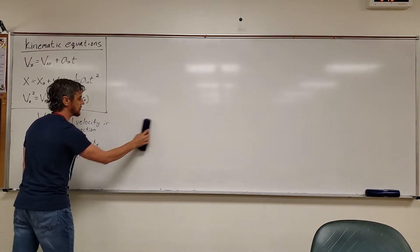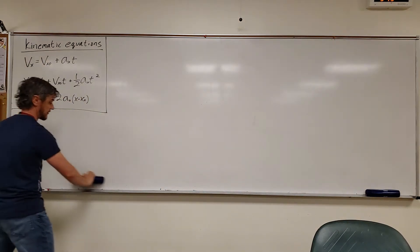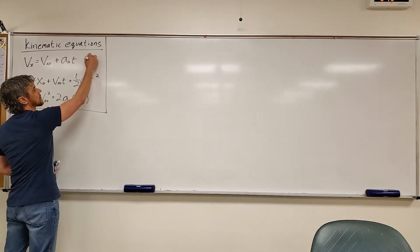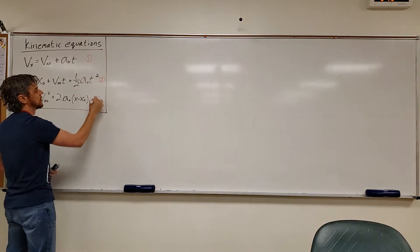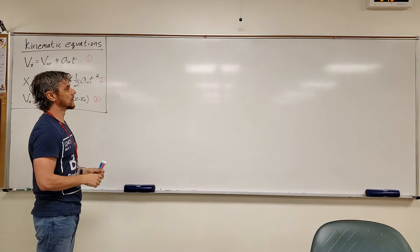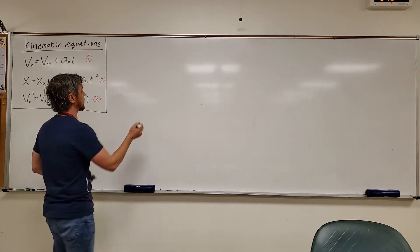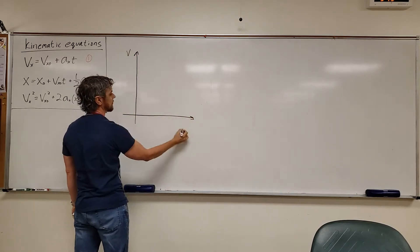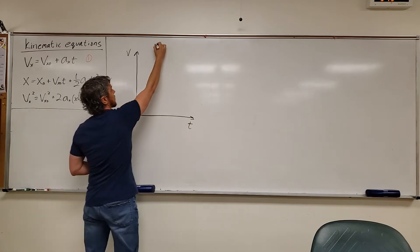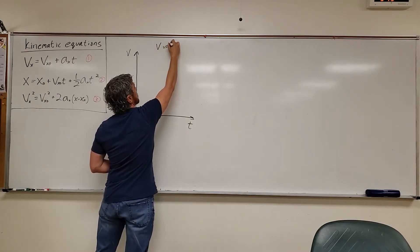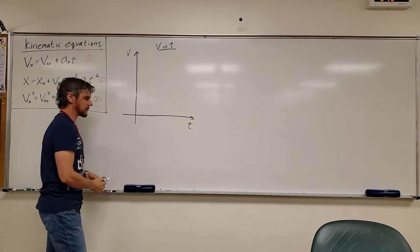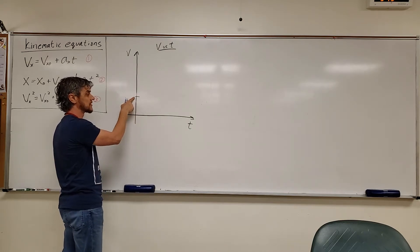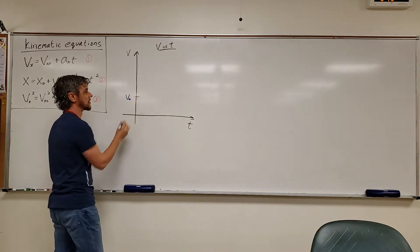Now I'll derive these equations using board space. I'll refer to them as kinematic equation number one, two, and three. For kinematic equation number one, I'll use something we're already familiar with: the velocity versus time graph. Let's say the object starts with some non-zero initial velocity in the X direction and ends with some final velocity at some time T.